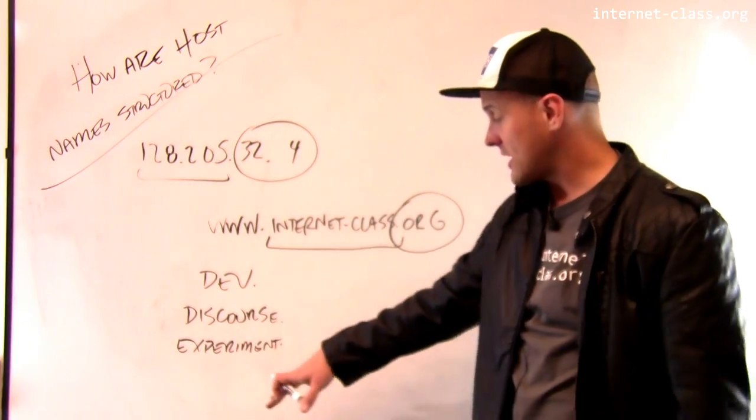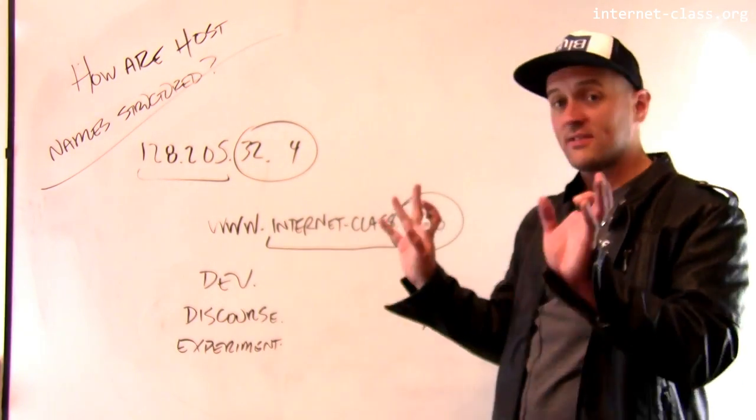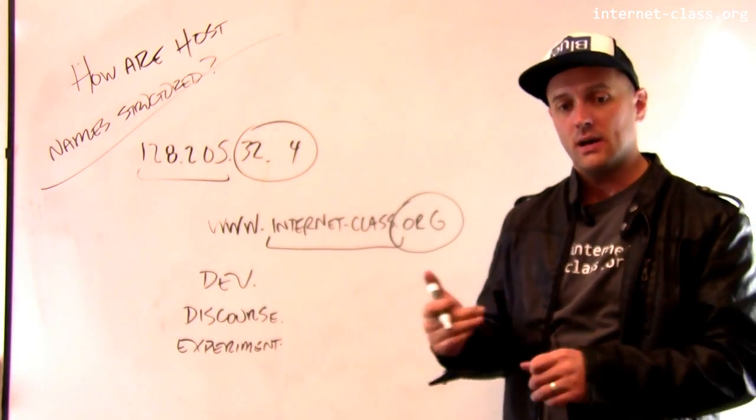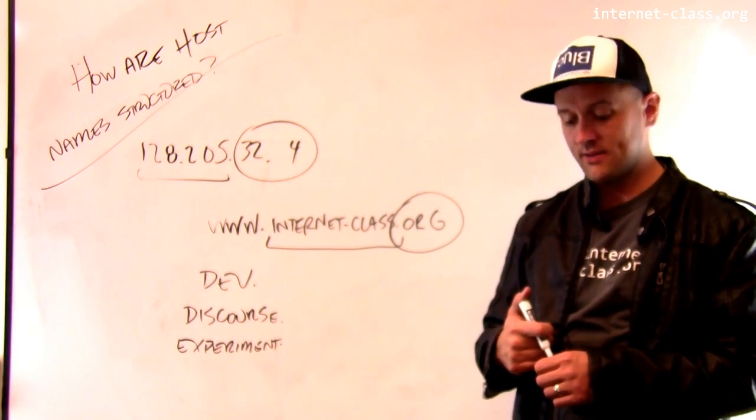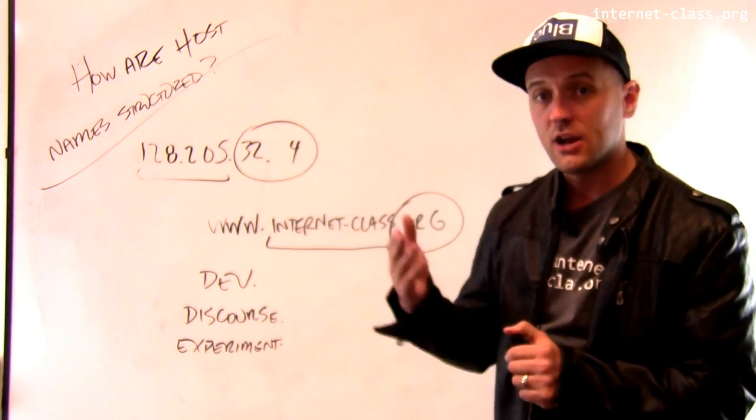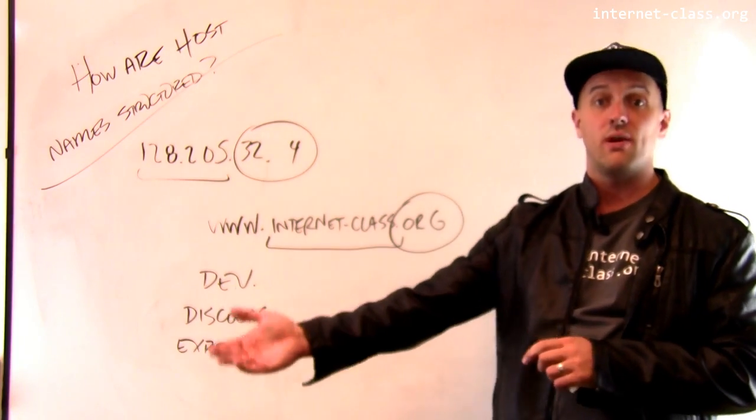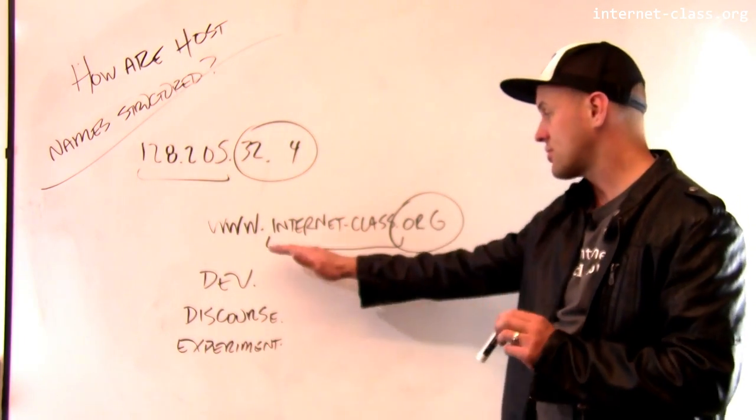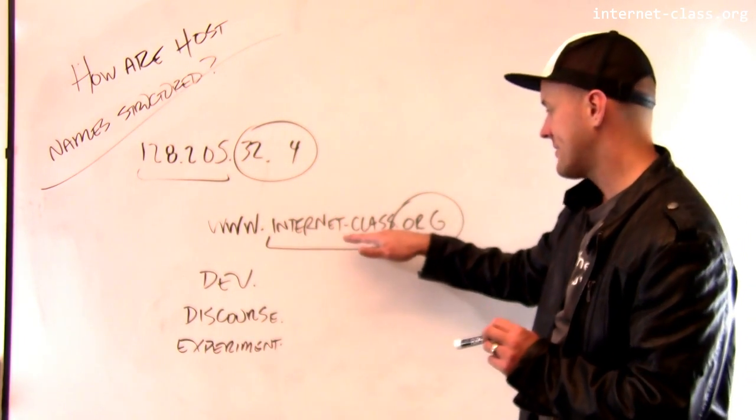So I can essentially name anything I want to. This is mine, right? So I purchased this through Google Domains. There's a nice website I can go onto where if I want to create a new name, I can create it and I can register it so that it points at an IP address. But I am in control of internetclass.org.